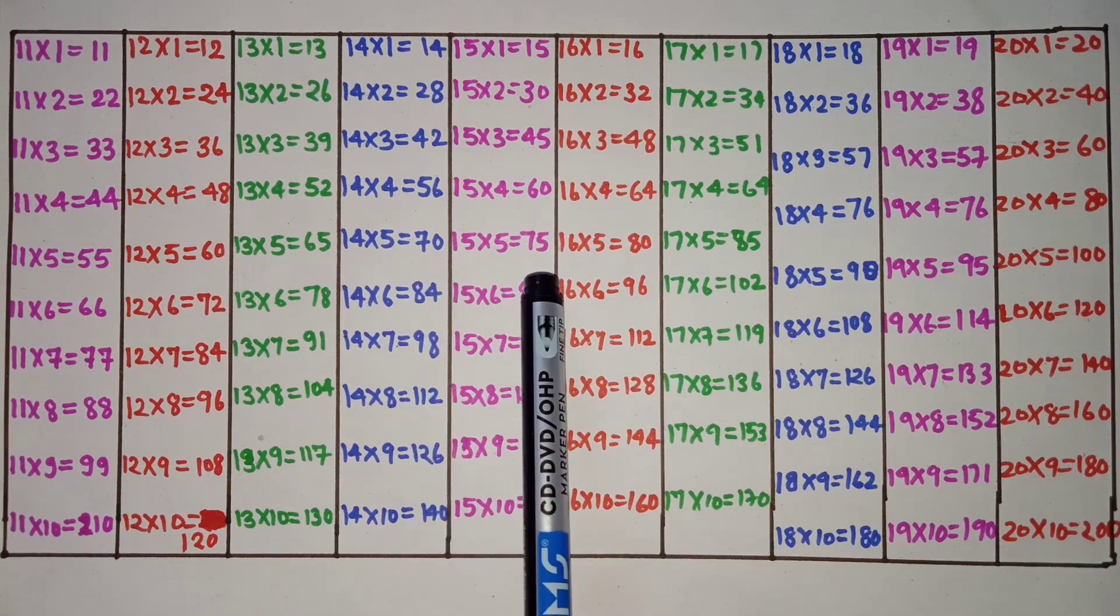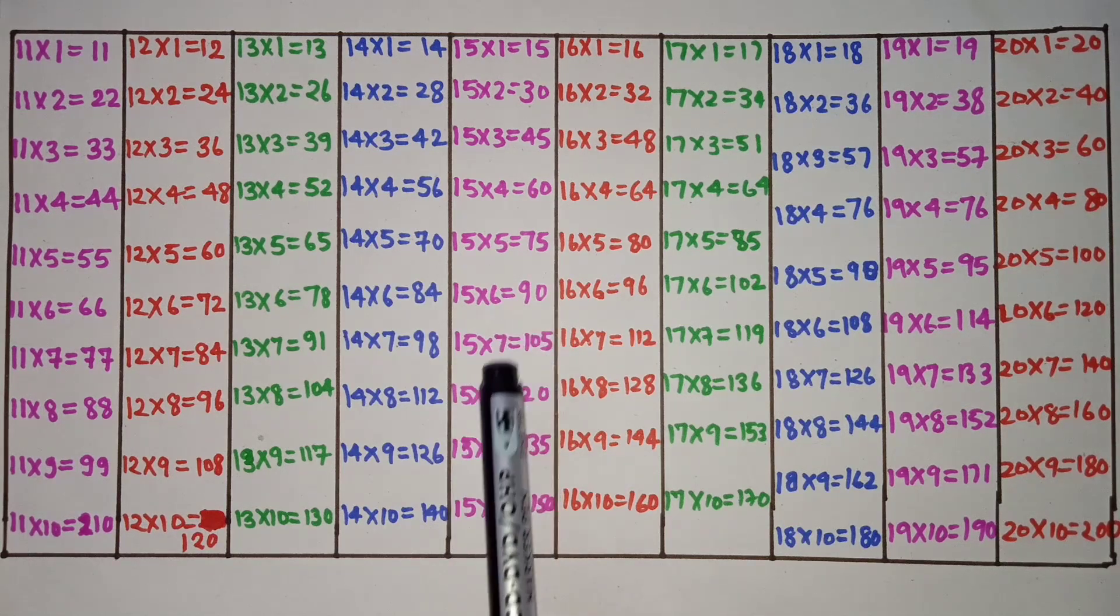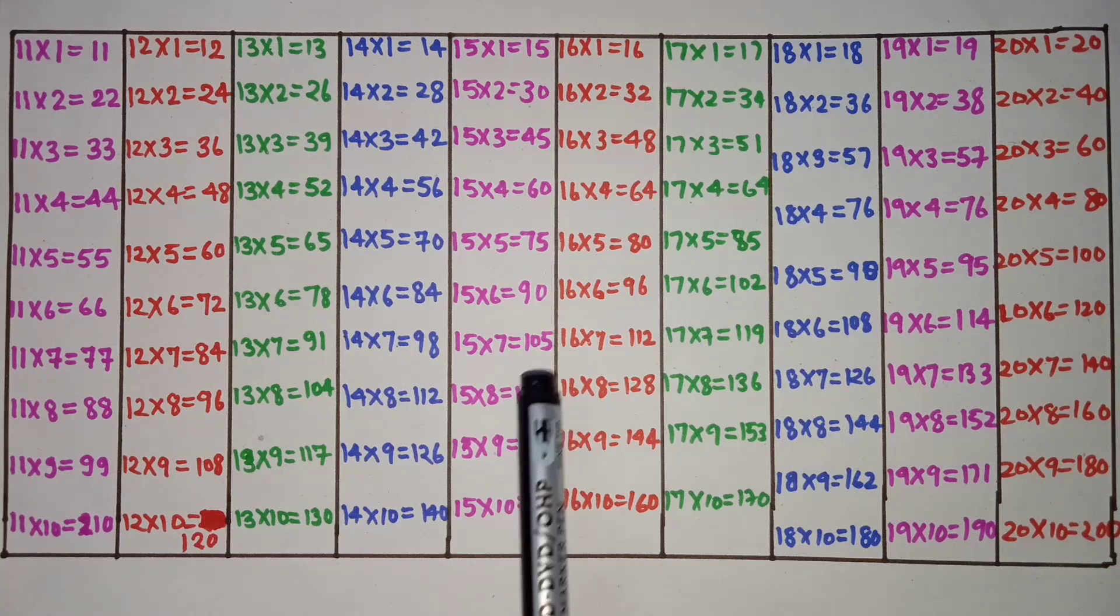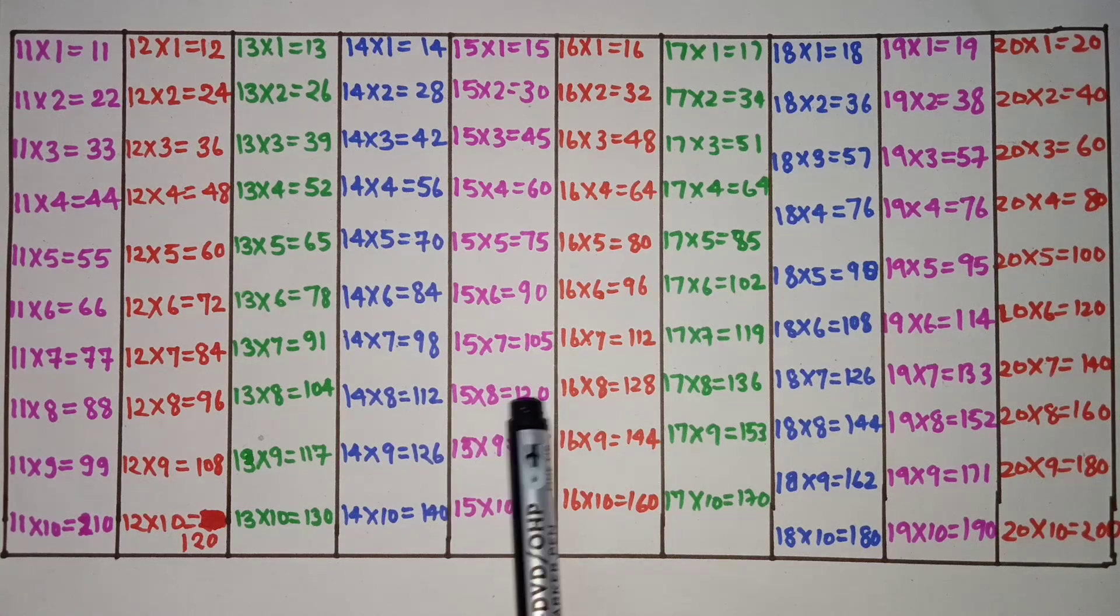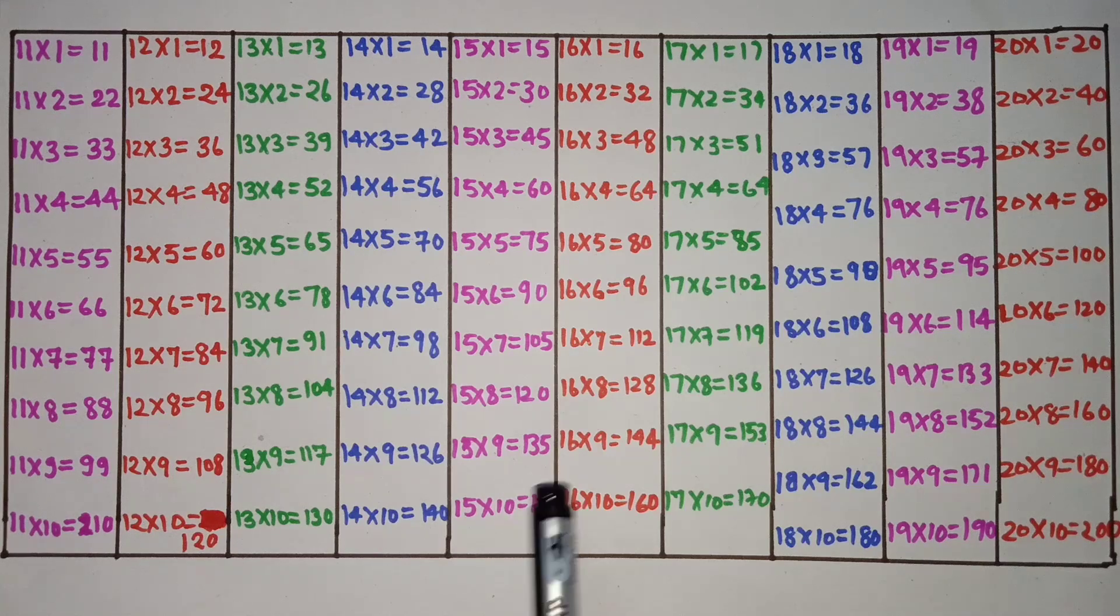15 fives are 75, 15 sixes are 90, 15 sevens are 105, 15 eights are 120, 15 nines are 135, 15 tens are 150.